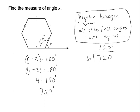And now, I have all the information that I need in order to figure out what x is. Because the 120 degree interior angle of the hexagon plus x is equal to a straight angle, a straight line, and that is 180 degrees.